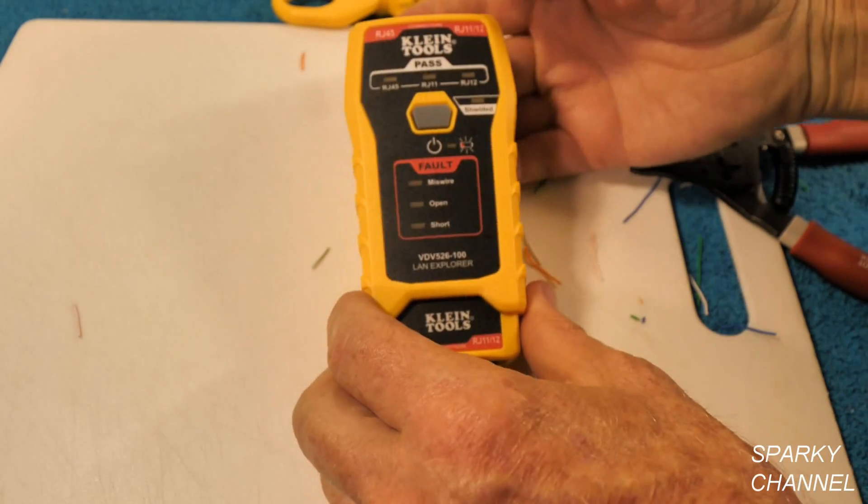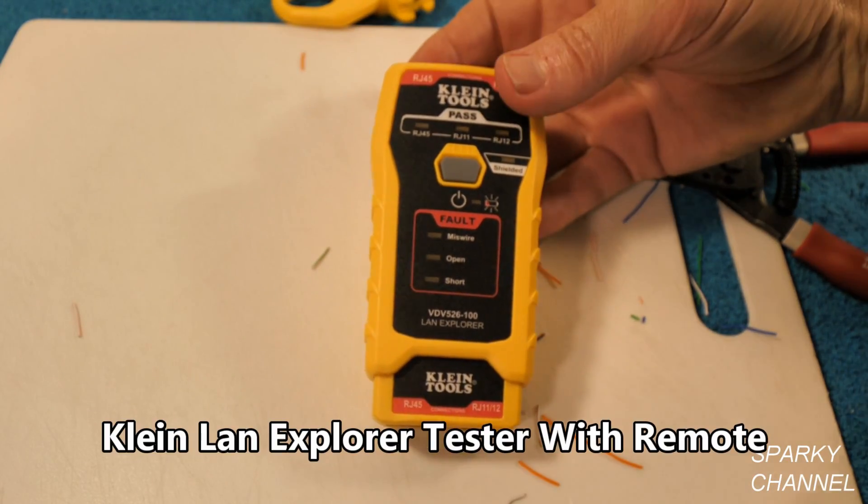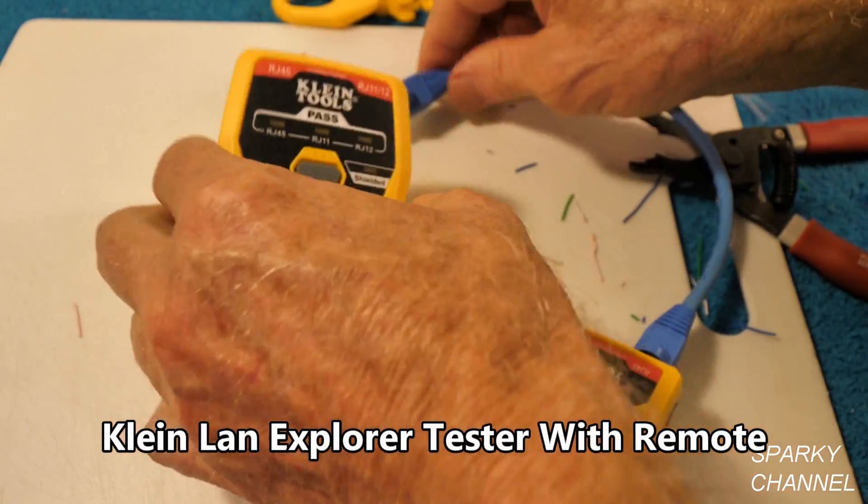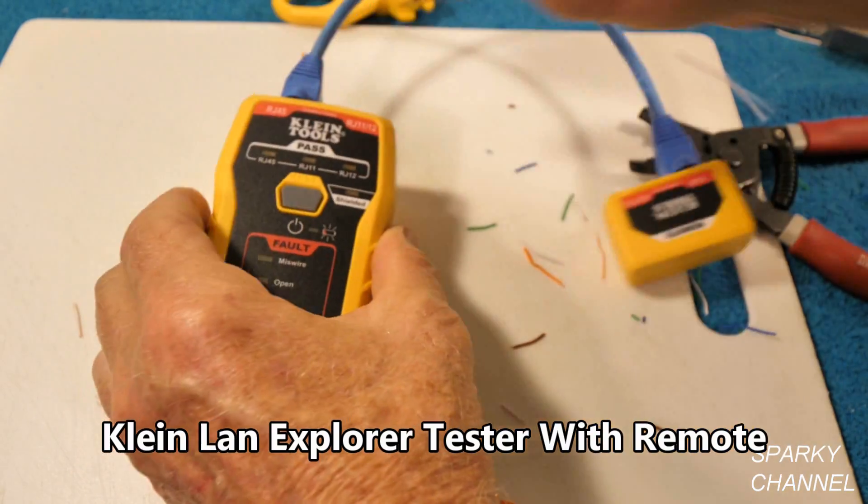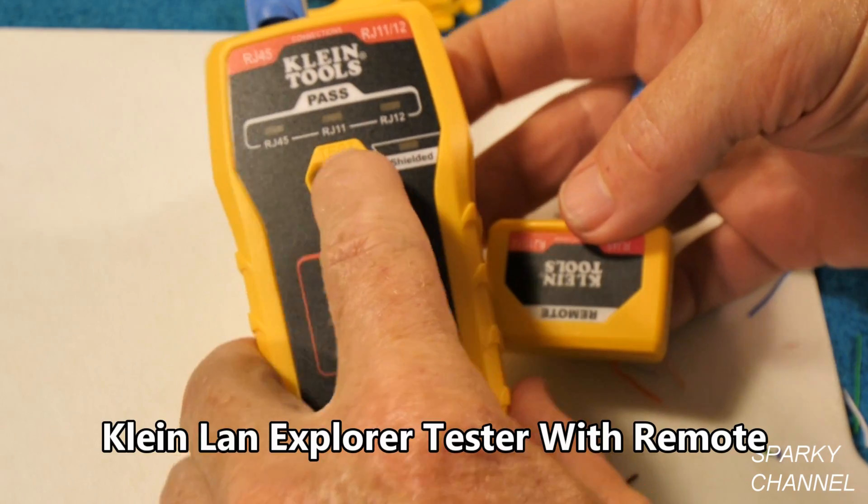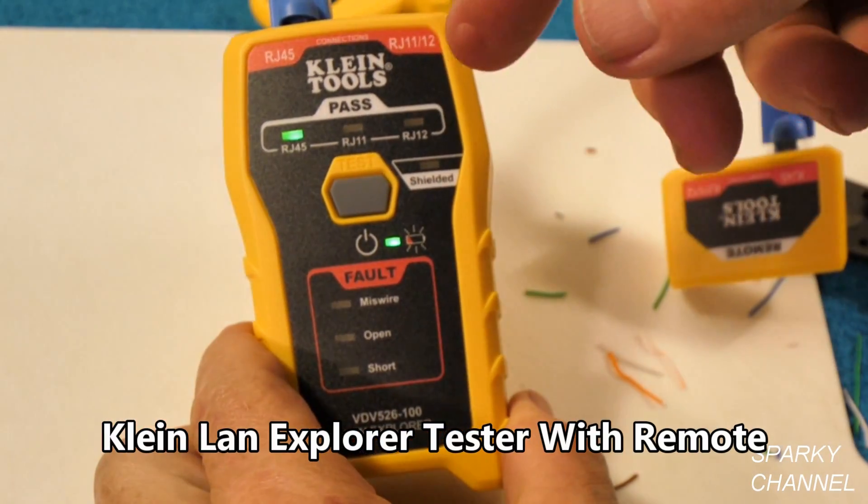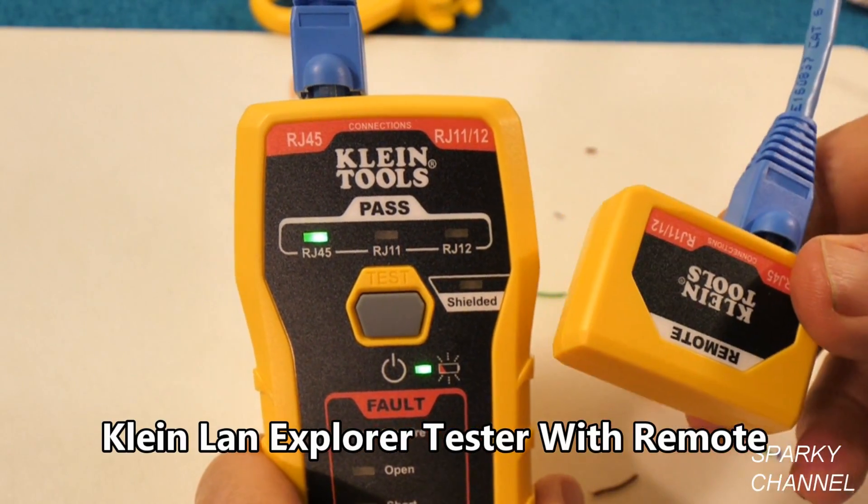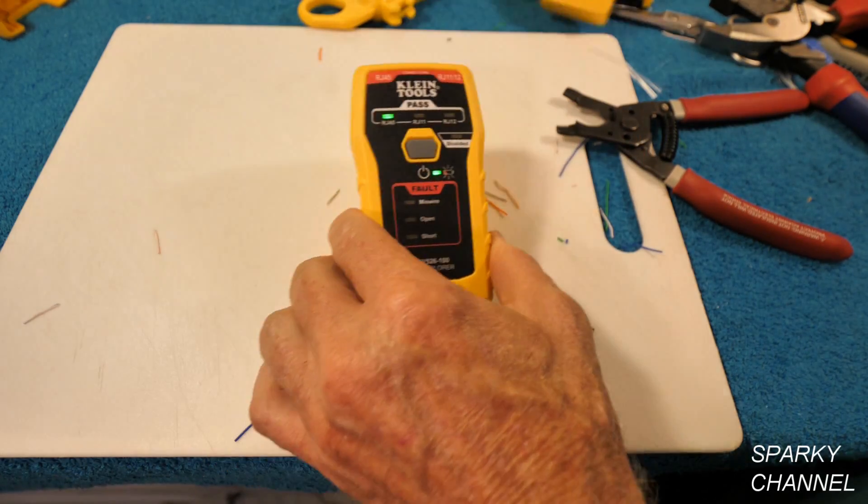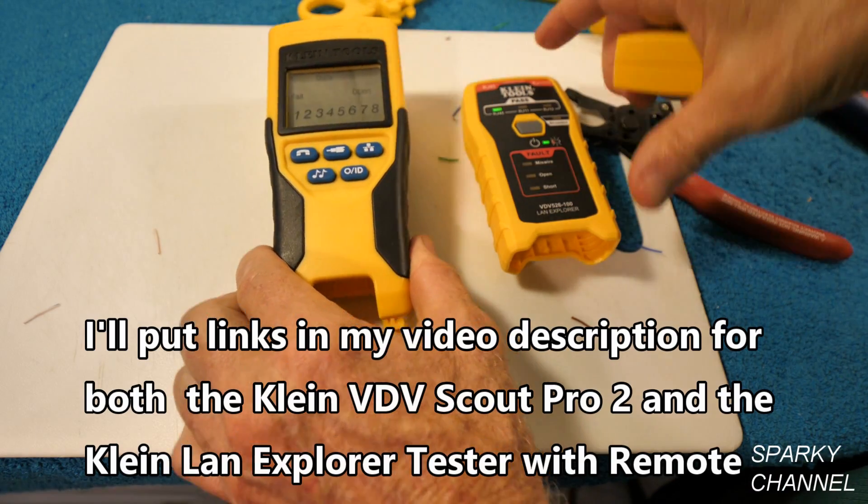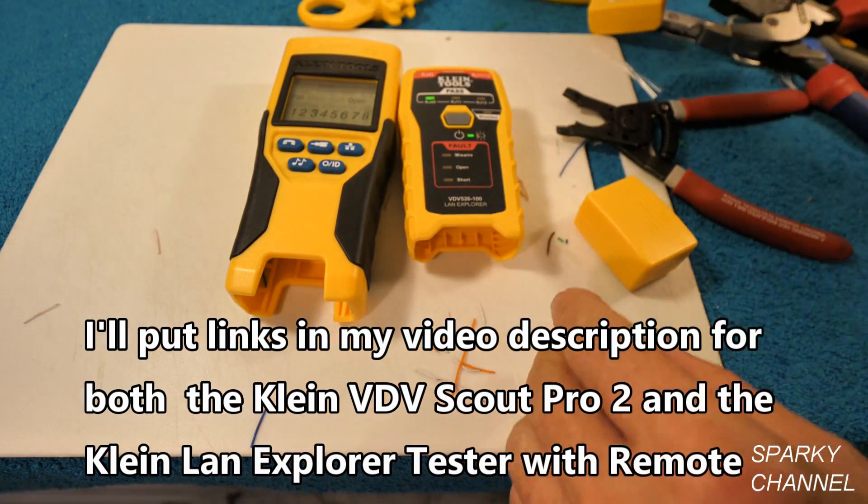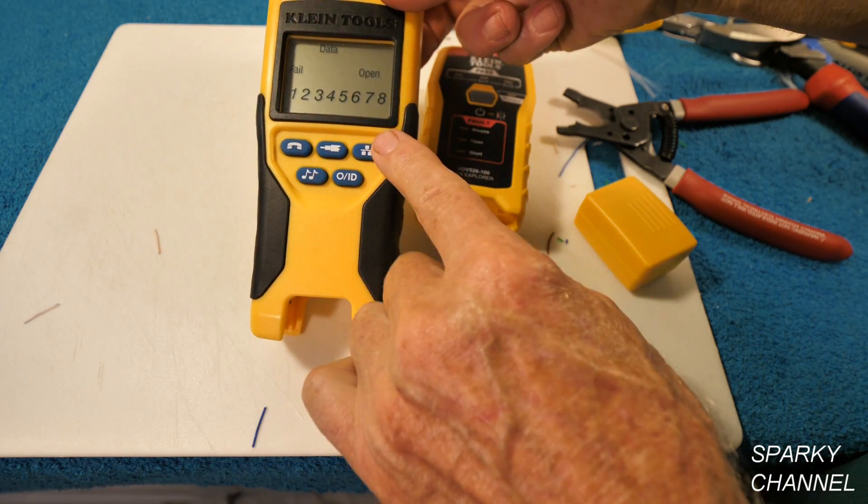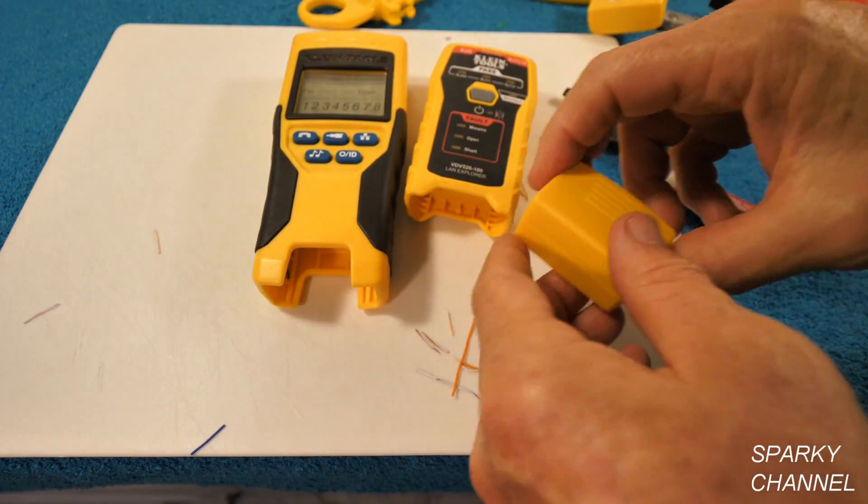Now I'm going to try it with this brand new tester. Klein just came out with this brand new tester. And it has the remote down here. So you plug in the remote. And you plug in into the tester itself. And you press test. And there it is. It passed. It recognizes that it's RJ45. And it says passed. So there's the remote. So there's two testers here. You got the VDV Scout Pro 2. And this new one. This one's I think it's around $27. Something like that. This one's around $74.